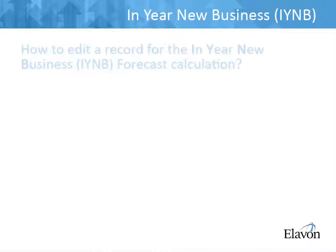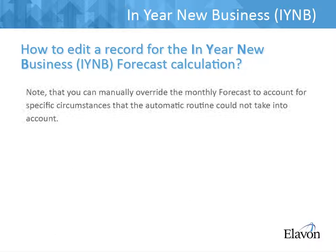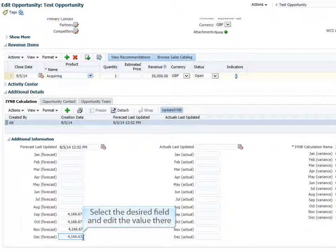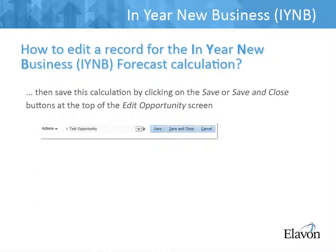How to edit a record for the IYNB forecast calculation. Note that you can manually override the monthly forecast to account for specific circumstances that the automatic routine may not take into account. You may for instance update the forecast for the 1st month to reflect certain fees that would only occur once, or you may want to raise the values for December due to the expected increase in turnover before Christmas. Just enter a new value into the desired field, and save the opportunity by clicking on the Save or Save and Close buttons at the top of the Edit Opportunity screen.